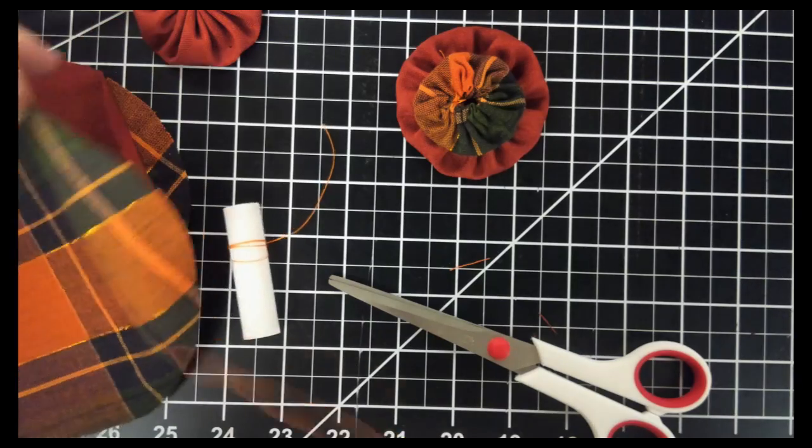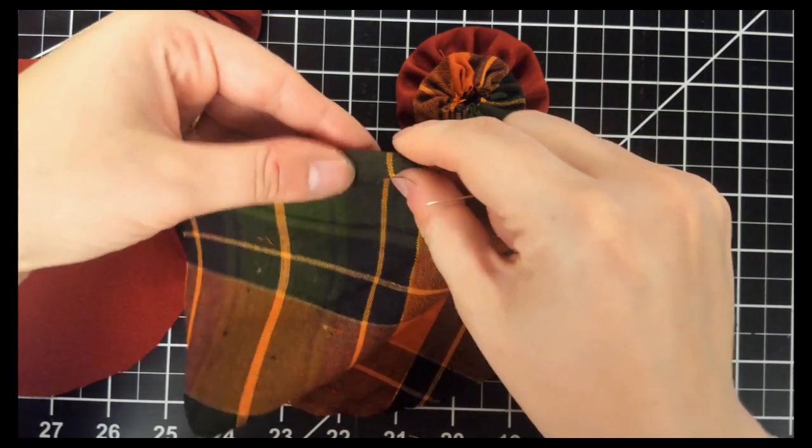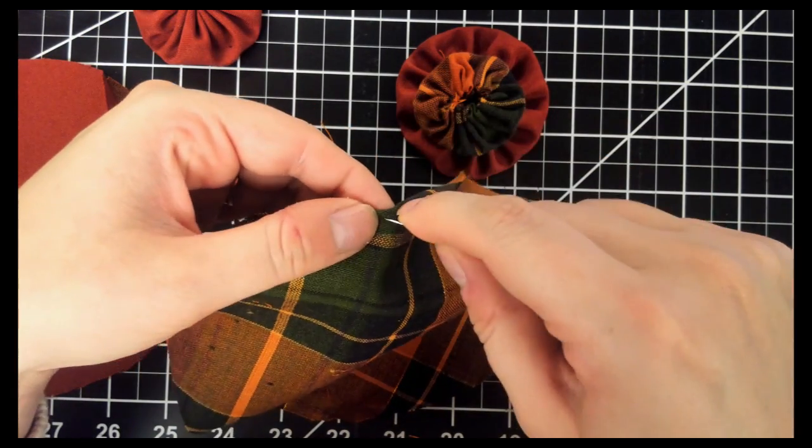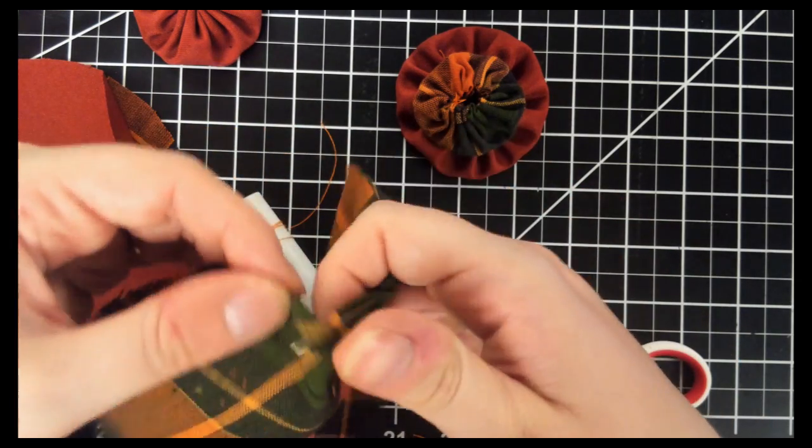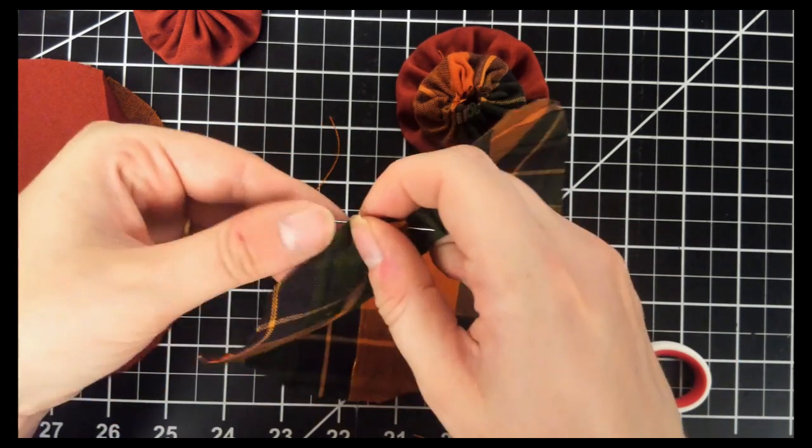Now we're at the 7 inch circle. This is our biggest circle we have, and we're just going to do the exact same thing we've done with all the rest of them.